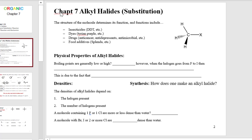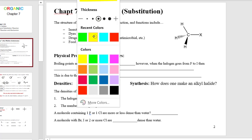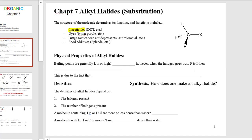We see alkyl halides in lots of different types of molecules. We might see them in insecticides like DDT, which has lots of chlorines in it. Having halogens isn't always toxic — for example, Splenda or Sucralose is very similar to sucrose but with three alcohols replaced by chlorines, and we can ingest that. Dyes like Tyrian purple have bromines, and lots of drugs have strategically placed halogens. So halogens have a variety of different usefulness out in the world.